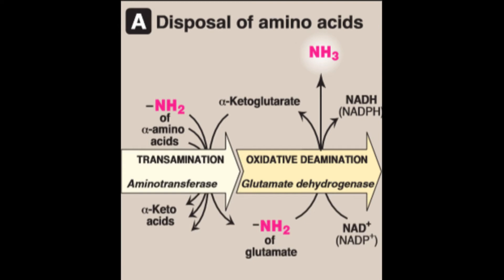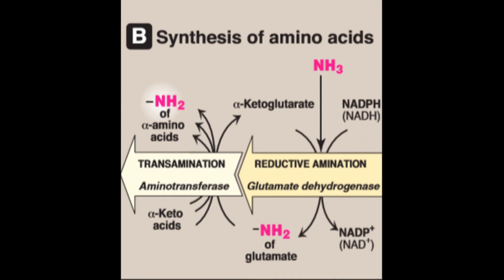For disposal of amino acids through degradation, they can undergo transamination or oxidative deamination, where ammonia is removed. For synthesis of amino acids, it will involve reductive amination and transamination.